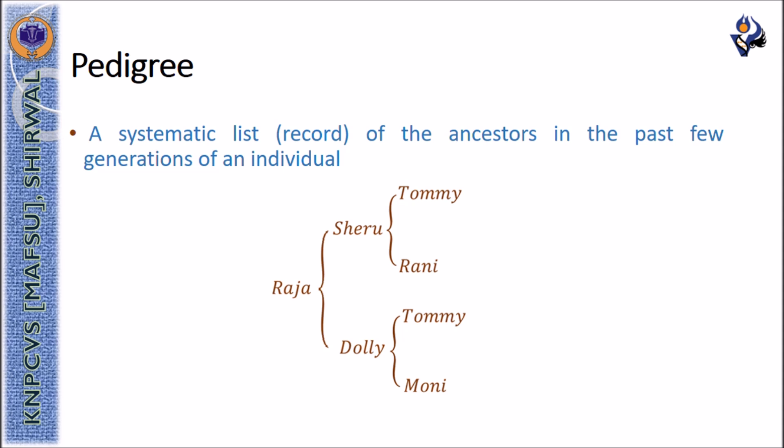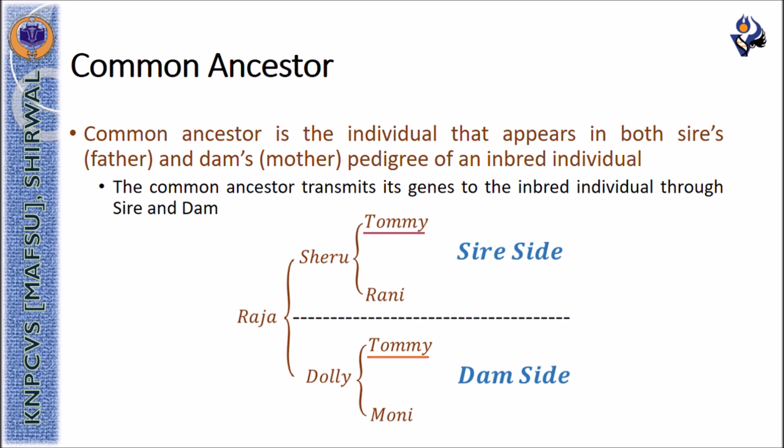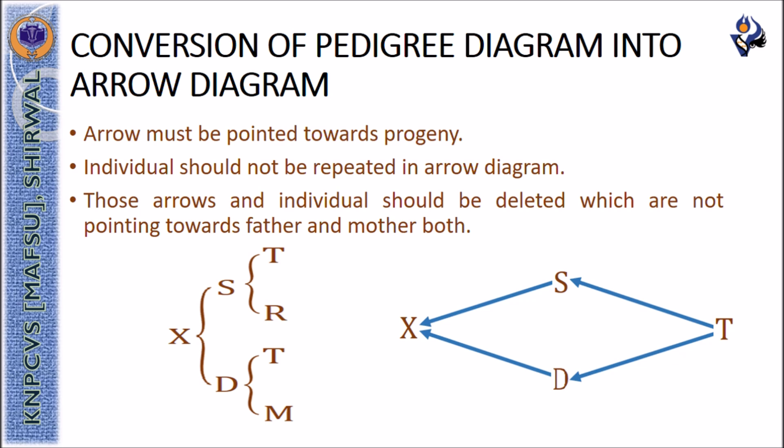Here you can see an example of a pedigree. A pedigree is a systematic list or record of the ancestors of an individual over past generations. This is the pedigree of Raja, where Sheru is the sire, Dolly is the dam, and Tommy and Rani are the sire and dam of Sheru. Similarly, Tommy and Moni are the sire and dam of Dolly. The common ancestor is the individual that appears on both the sire and dam sides of the pedigree. Tommy appears on both sides, so Tommy is the common ancestor of Raja.